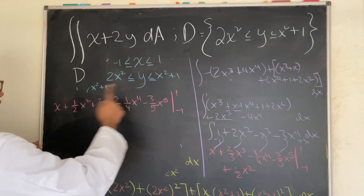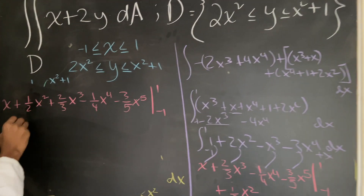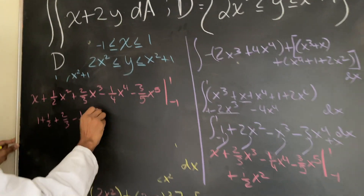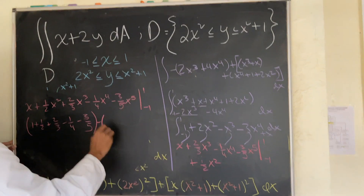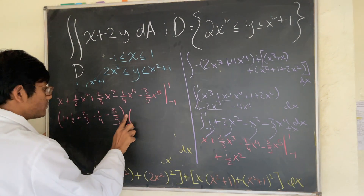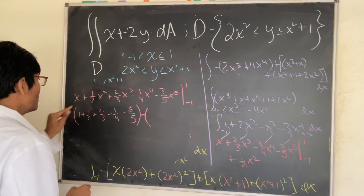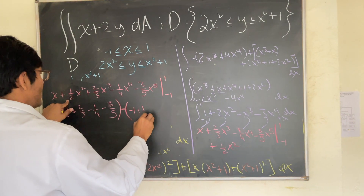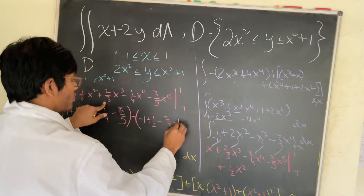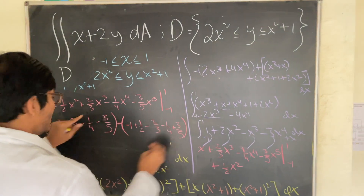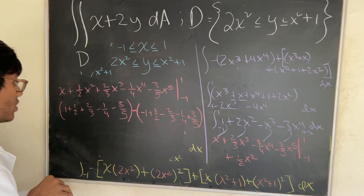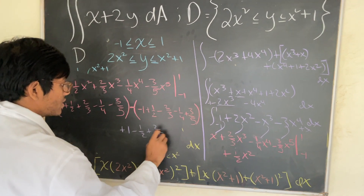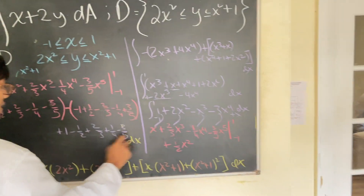Plugging in x equals 1: we get 1 plus one-half plus two-thirds minus one-fourth minus three-fifths. From this we subtract the expression evaluated at x equals negative 1: that gives negative 1 plus one-half minus two-thirds minus one-fourth plus three-fifths.